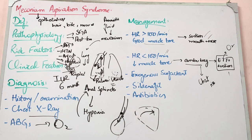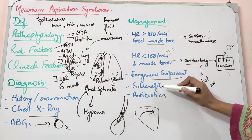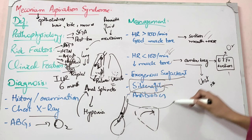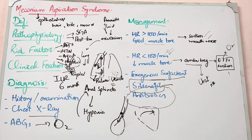If meconium aspiration has damaged the surfactant, you need to provide exogenous surfactant. Antibiotics are indicated when you cannot differentiate meconium aspiration pneumonia from bacterial pneumonia, so you can give broad-spectrum antibiotics.